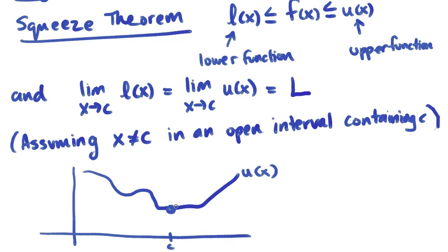we saw above, at the point c, u of x has a limit L. So it's approaching L from this direction and this direction.